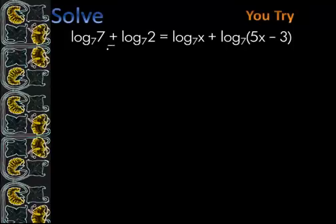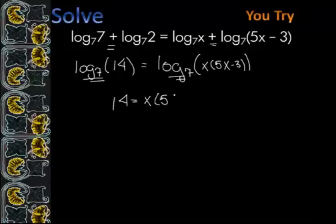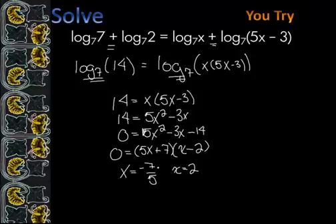One thing we know is that when we add we multiply. So this is the same thing as log base 7 of 7 times 2, which is 14. And once again when we add we multiply, so we have log base 7 of x times 5x minus 3. Since we have log base 7 on both sides, we can say 14 equals x times 5x minus 3. Now we solve as usual: make it equal to 0 and factor. When we solve this we end up getting x equals negative 7 fifths and x equals 2. We can't have the log of a negative number, so negative 7 fifths cannot be a solution. So the answer is just x equals 2.